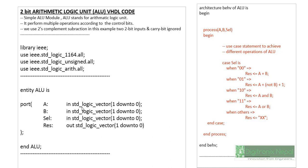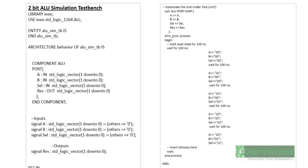The standard logic vector used here is also a data type in VHDL consisting of nine logic states, including `XX`, `0`, `1`, `W`, etc. The `case` statement ends, then the process ends, and the behavioral architecture ends. This is the very basic implementation of the 2-bit ALU in VHDL.